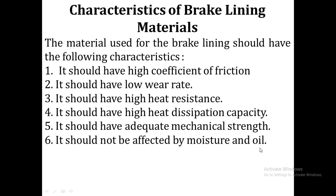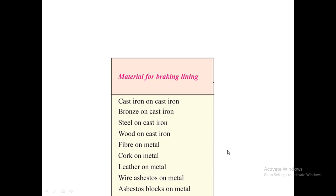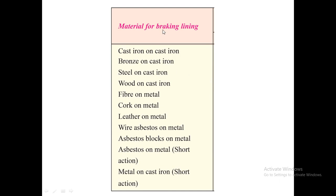We are going to see the different materials of brake lining along with the brake shoe. These include: cast iron on cast iron, bronze on cast iron, steel on cast iron, wood on cast iron, fiber on metal, cork on metal, leather on metal, wire asbestos on metal, asbestos block on metal, asbestos on metal, and metal on cast iron. These are the friction lining materials.